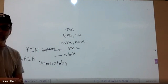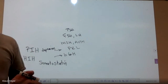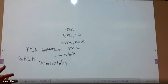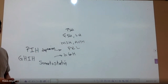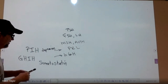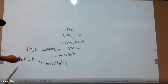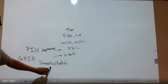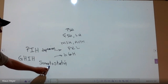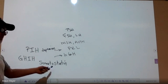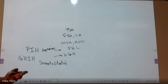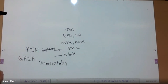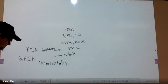When you see the word statin or static, think of it as not doing anything — static, not moving. So somato means growth, and statin means stopping — hence somatostatin. GIH, or somatostatin, is used clinically in certain types of cancers to stop what we call neuroendocrine tumors from growing.